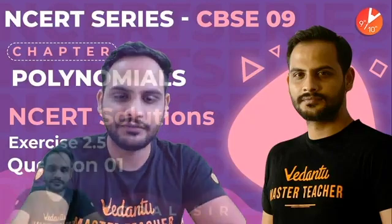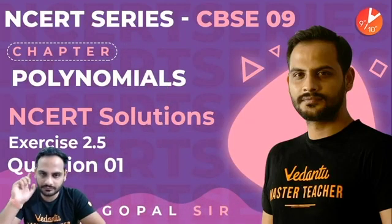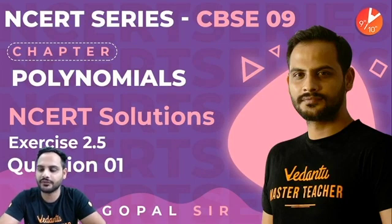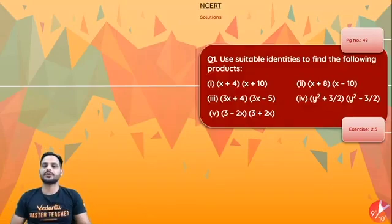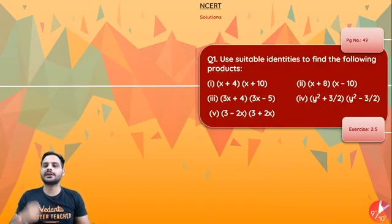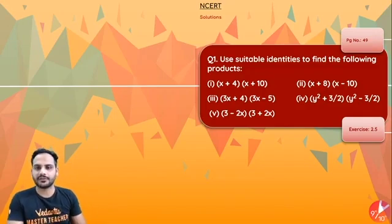So in this session we will be talking about topic polynomials, exercise 2.5 question number 1. The question is saying use suitable identities to find the following products.